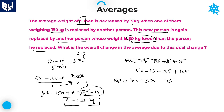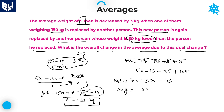The question asks: what is the overall change in the average due to this dual change? Initially the sum of all 5 members was 5x, but the new sum is equal to 5x minus 45. Therefore, the change in average — taking sum divided by number of persons — is 5x by 5 equals x, and the new average is 5x minus 45 by 5, which equals x minus 9.